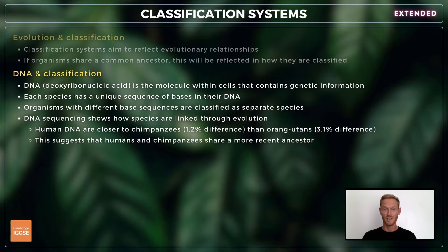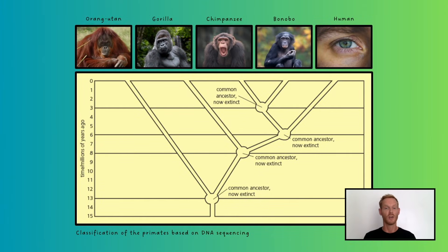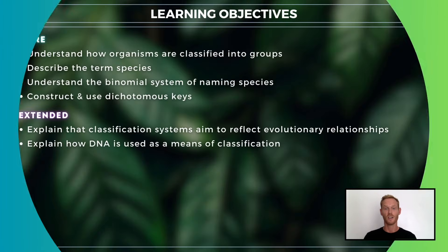DNA sequencing has also helped us to better understand how species are linked through evolution. For example, humans are more closely related to chimpanzees than orangutans, as the base sequences in our DNA are more similar. Our genetic closeness to chimps suggests we share a more recent ancestor.